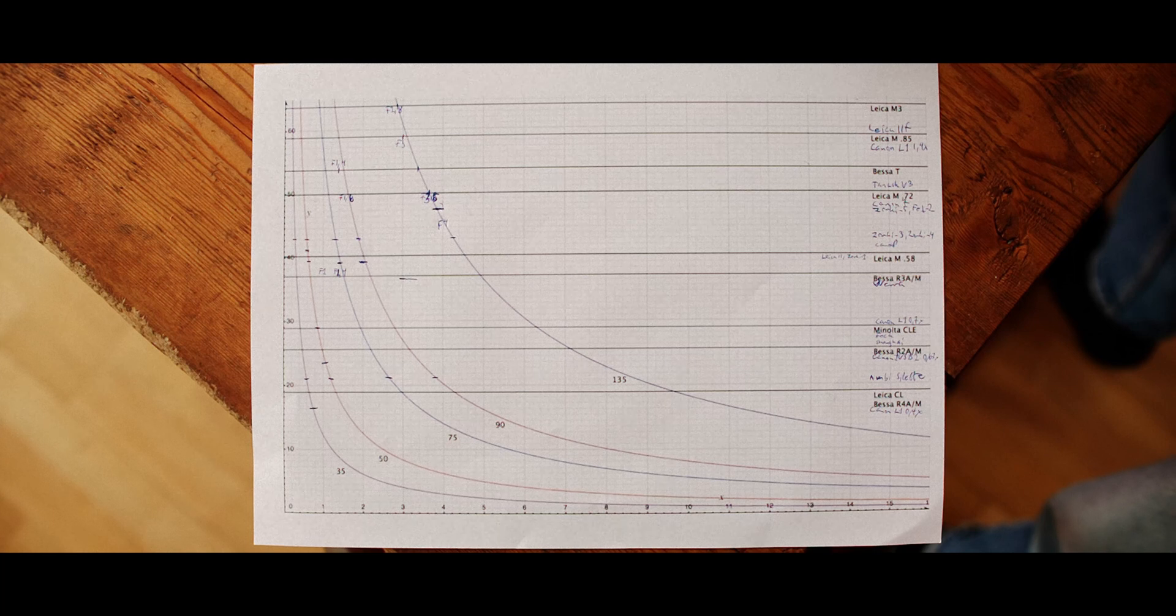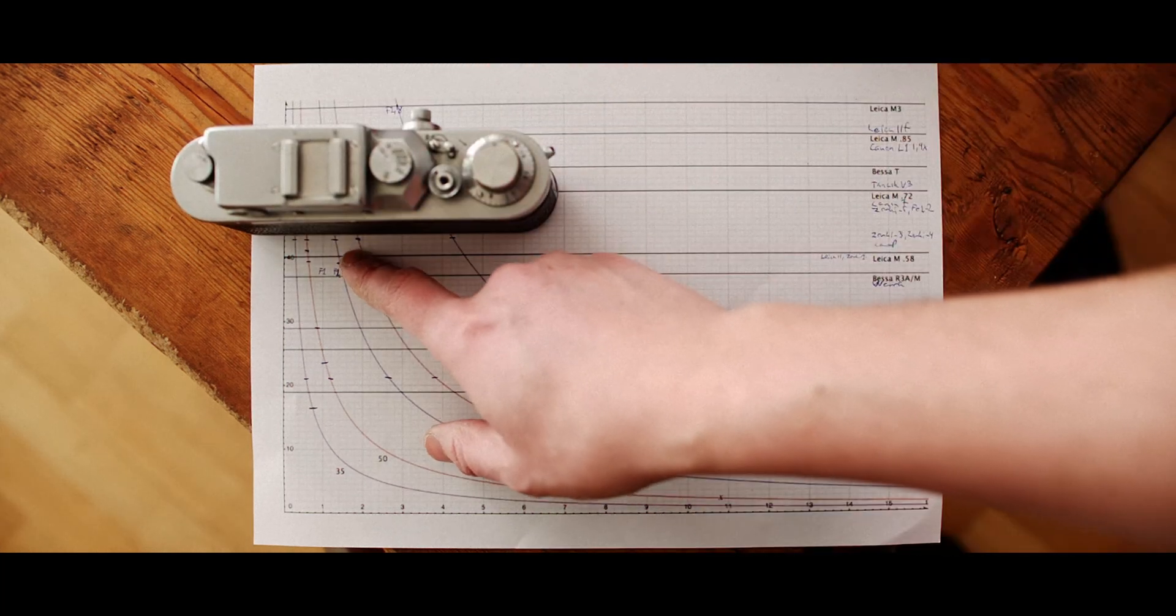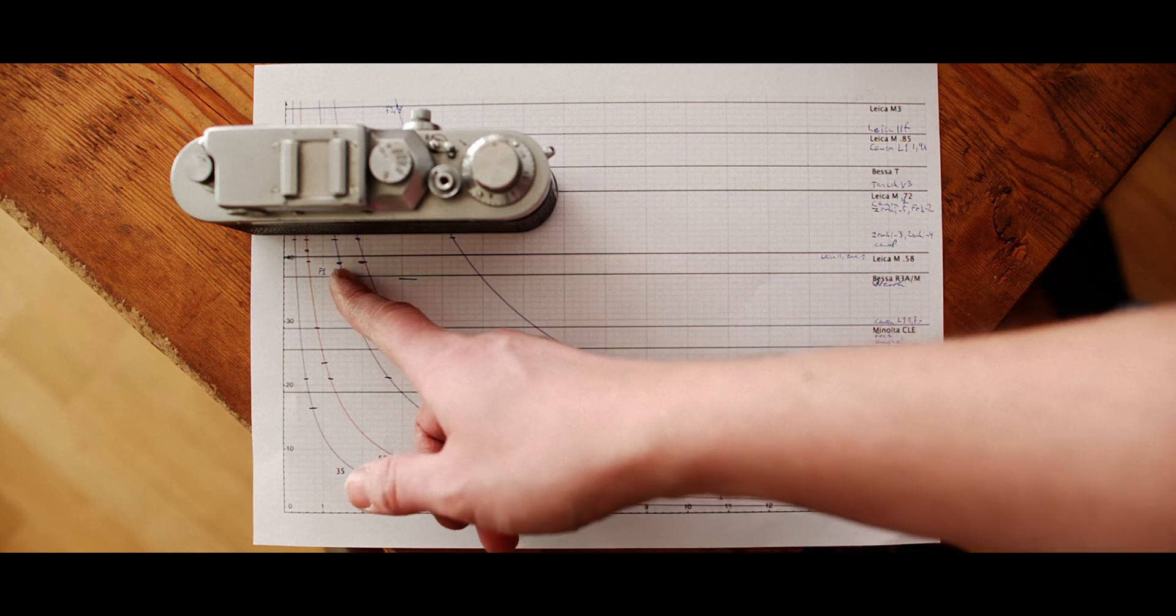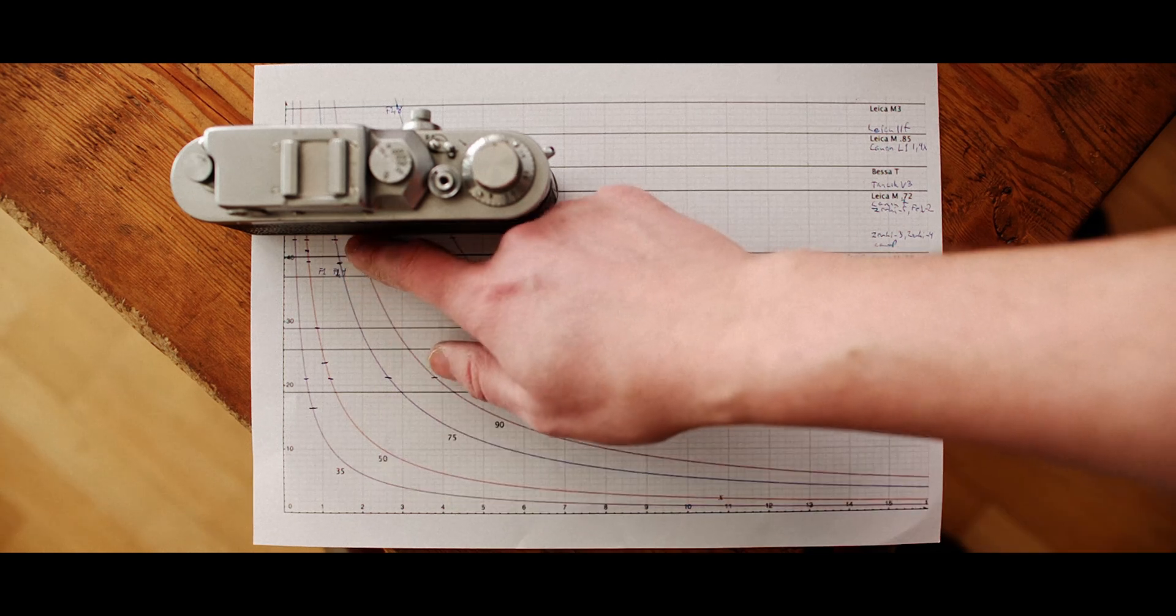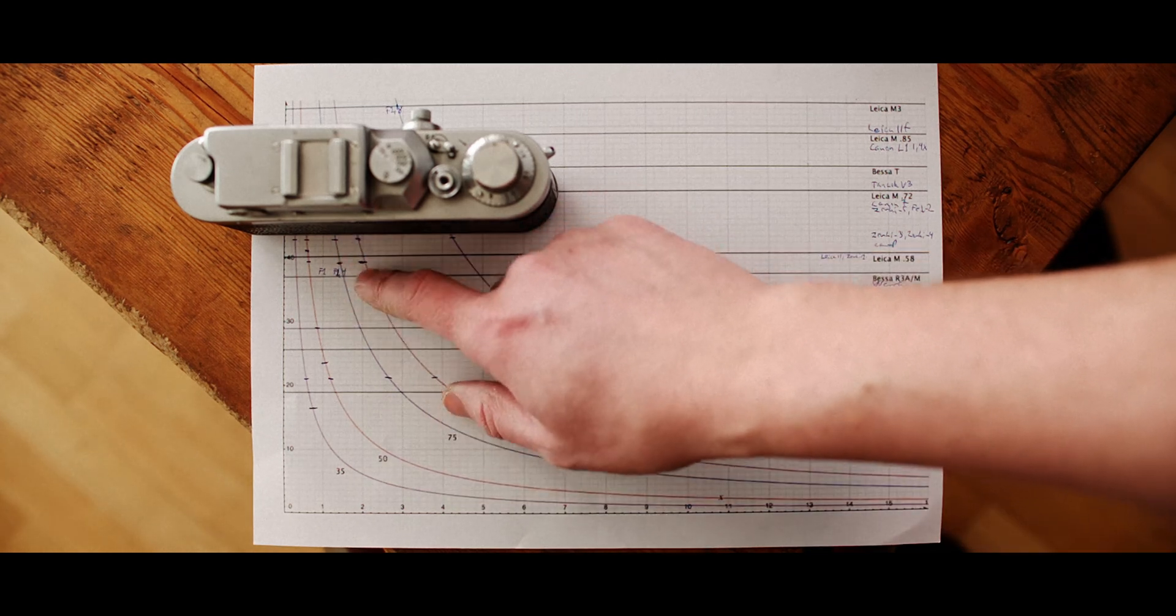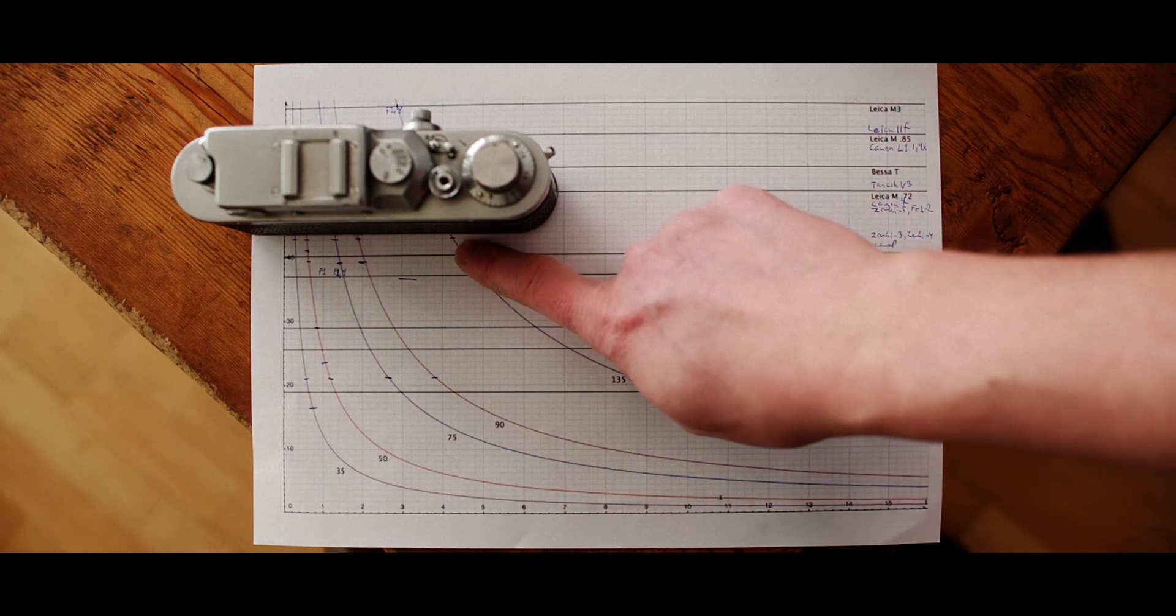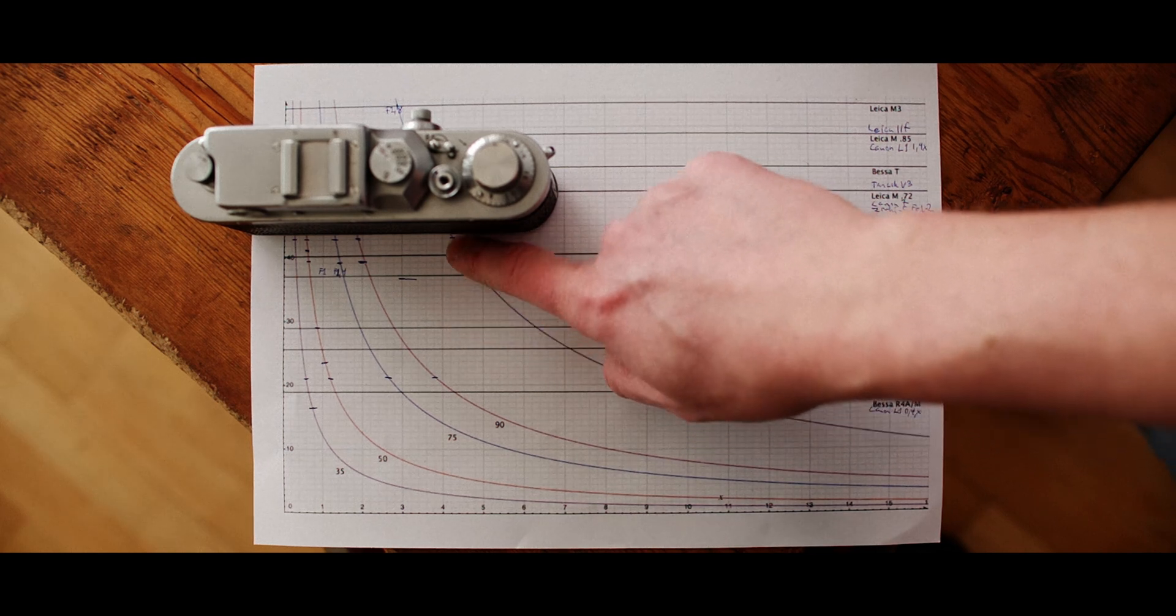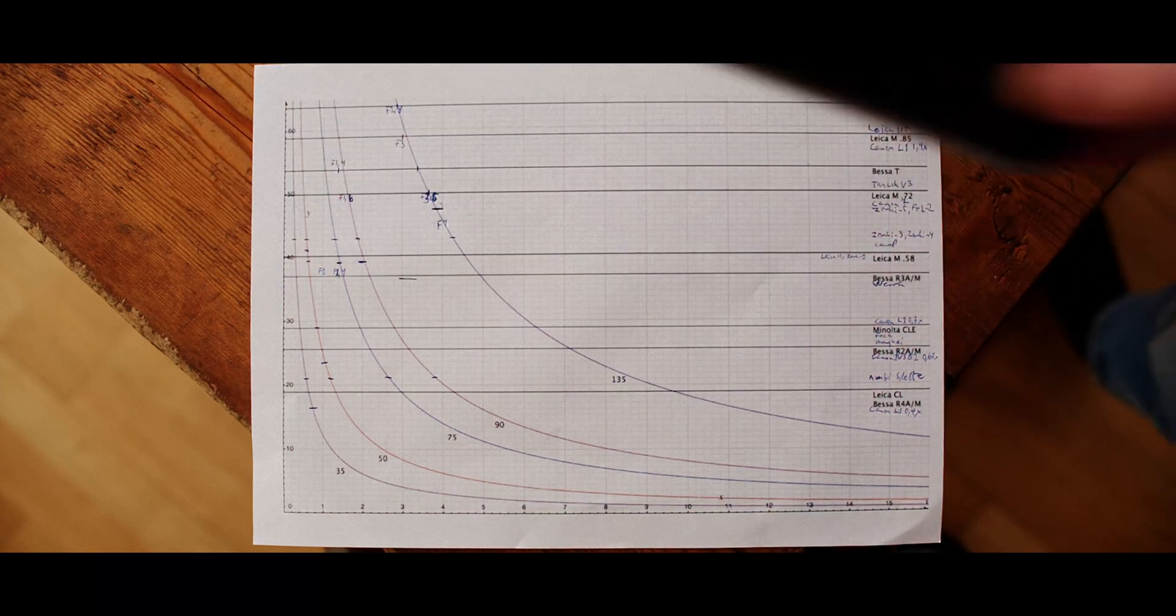The Zorki 3 and Zorki 4. Well, you might understand why they increase the magnification. Because the Jupiter 9 85 millimeter f/2. 2 is here. It's right in this region. So a little bit of a margin. But still the 135 millimeter lens it's just above f/4. So not quite there.